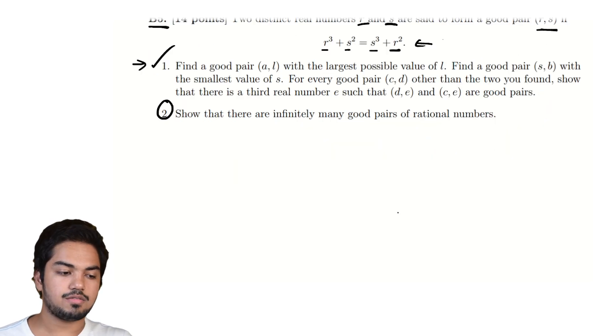So let's see what the first part says. Find a good pair (a, l) with the largest possible value of l, and find a good pair (s, b) with the smallest value of s. And for every good pair (c, d) other than the two you found, show that there is a third real number e such that (b, a) and (c, a) are good pairs.